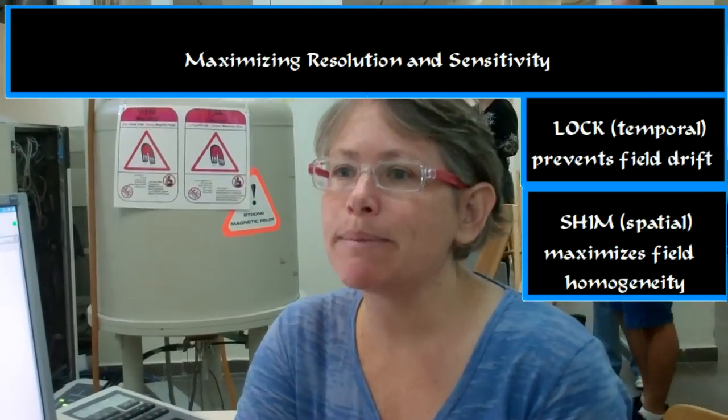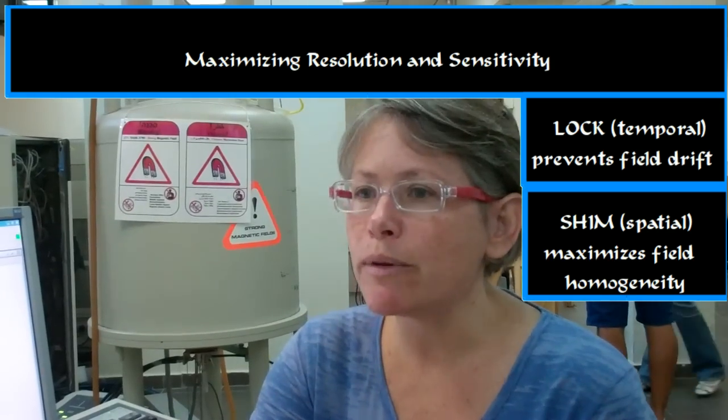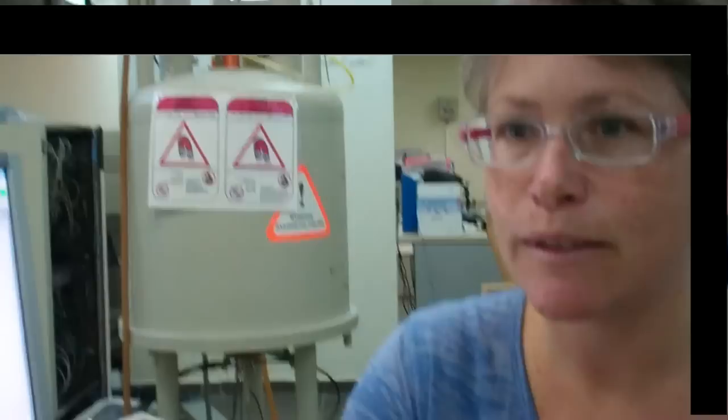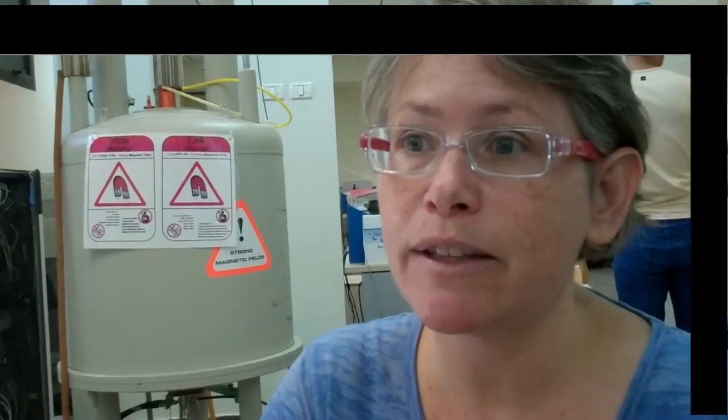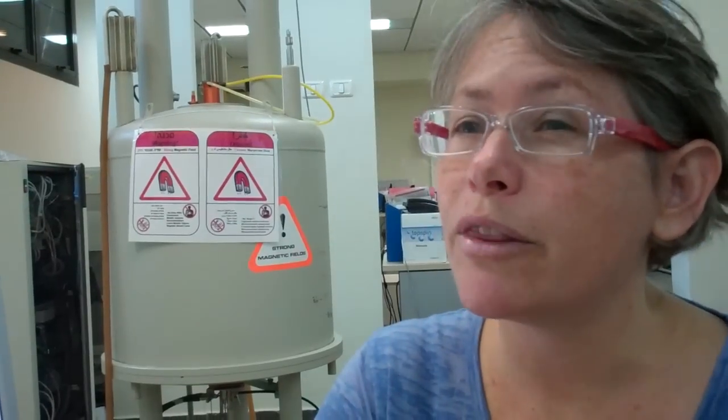Let's start by explaining lock and shim. The precession frequencies that we measure by NMR are directly proportional to the external homogeneous static magnetic field. There are two types of magnetic field deviations that will give us multiple chemical shift values for the same group of protons. Not a good thing.